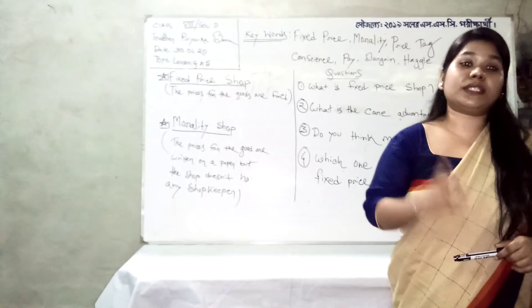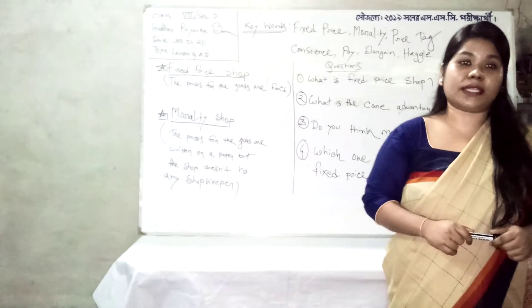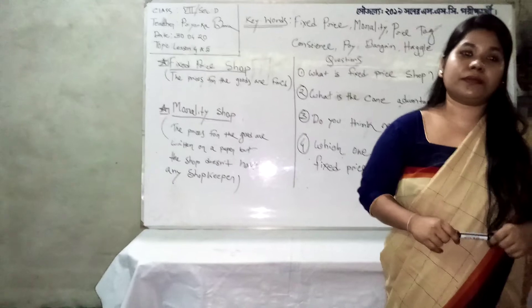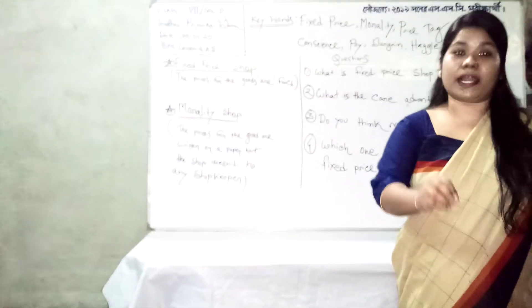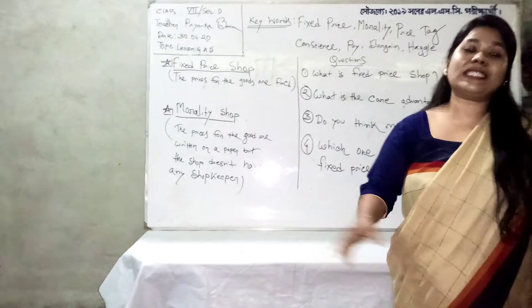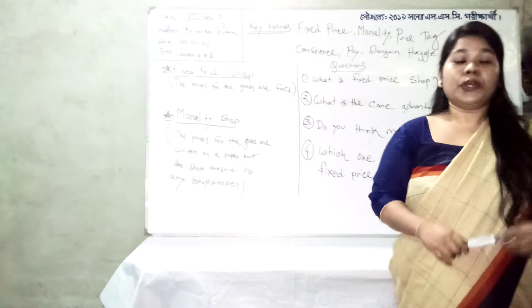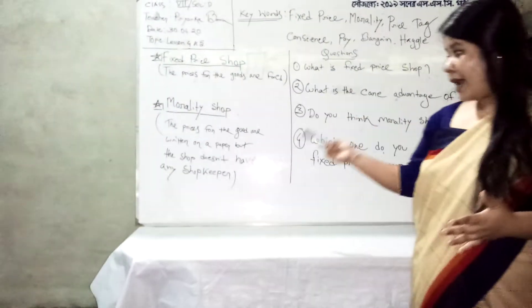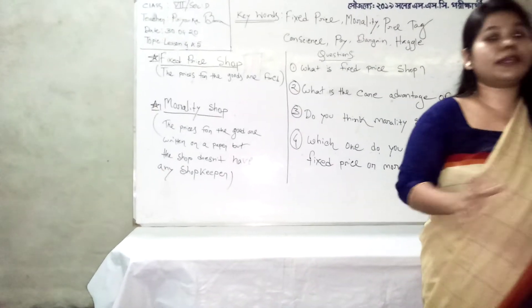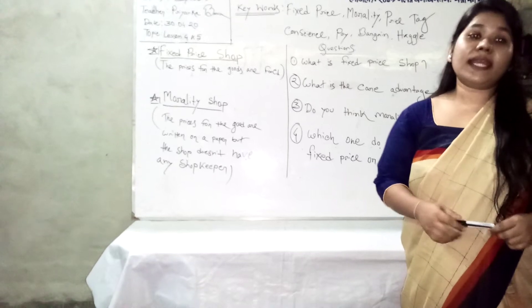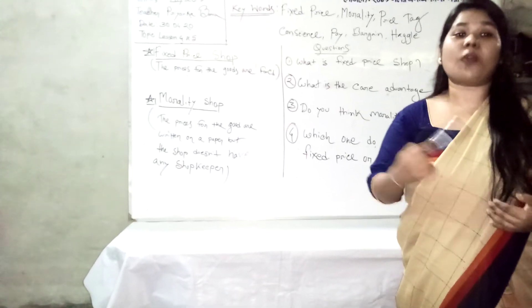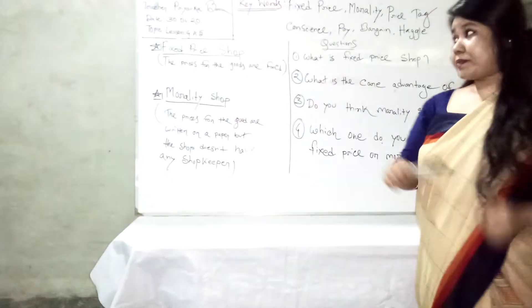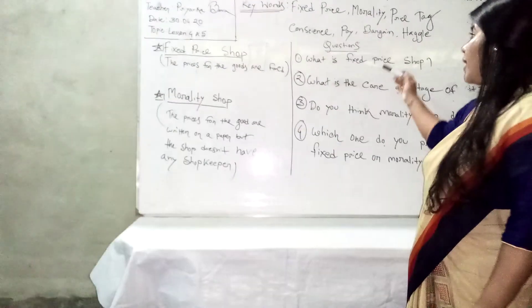Now, what kind of shop actually works in our society — do you prefer the fixed price shop or the morality shop? The main difference is that in a fixed price shop the goods are labeled with a fixed value, but in the morality shop it totally depends on your morality and honesty. The goods are there with a price tag, but no one is here to ask you or stop you — the only thing that guides you is your conscience, your inner honesty and truthfulness.